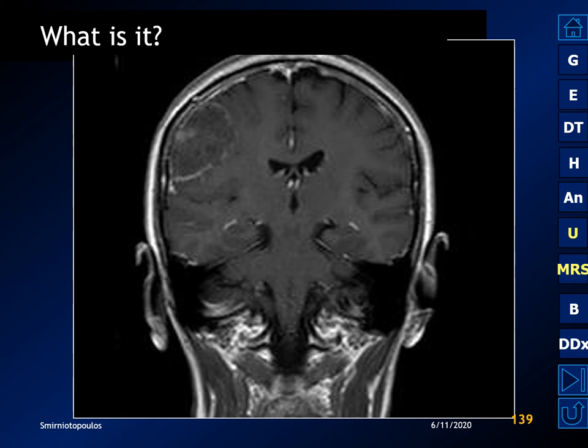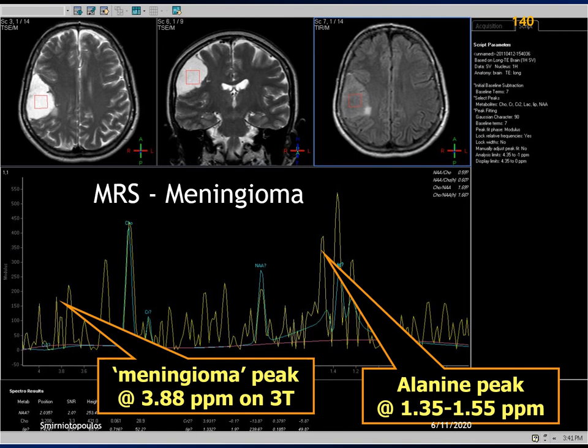Here's a classic 3 Tesla spectrum for a meningioma showing the characteristic peaks of alanine and the glutamate-glutamine peak at 3.8 parts per million. Spectroscopy in this humid or watery meningioma demonstrates that the fluid-like area has both the characteristic meningioma peak at 3.88 ppm as well as the alanine peak — both characteristics of meningiomas and not seen in other dural-based masses in the differential diagnosis.